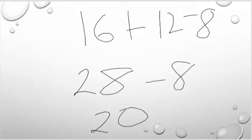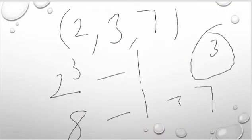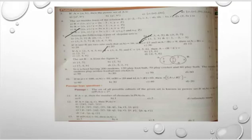The answer is B. Next: if A = {2,3,4,5,6}, B = {3,4,5}, and C = {4,5,6}, then A minus (B∩C) is to be found.